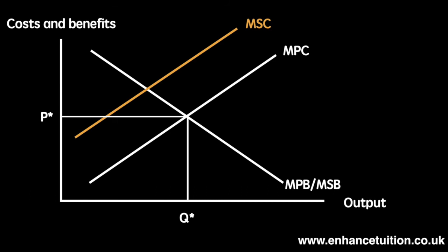Thus, the socially optimum level of output Qs is less than the free market allocation Q star. The socially optimum price Ps is higher than the free market price P star. The welfare loss or deadweight loss in this scenario is represented by the triangle XYZ.